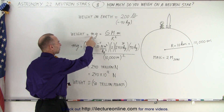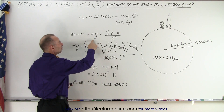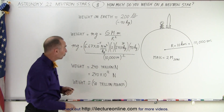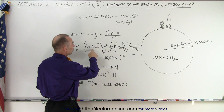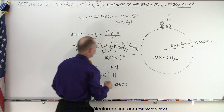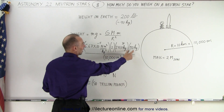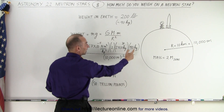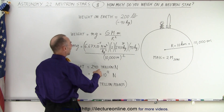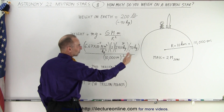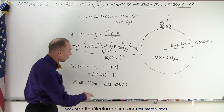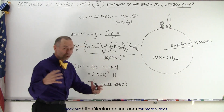The weight is your mass times acceleration due to gravity, which can be calculated using Newton's law of gravity. G is a known constant — it's the same everywhere in the universe. The mass of the neutron star is twice the mass of the sun, so we need a 2 there. This is the mass of the sun, and your mass is 90 kilograms, assuming your spacesuit is relatively light. Then you divide that by the radius squared. The radius is 10 kilometers, which is 10,000 meters. You square that, and since the radius is so small because the neutron star is so dense...